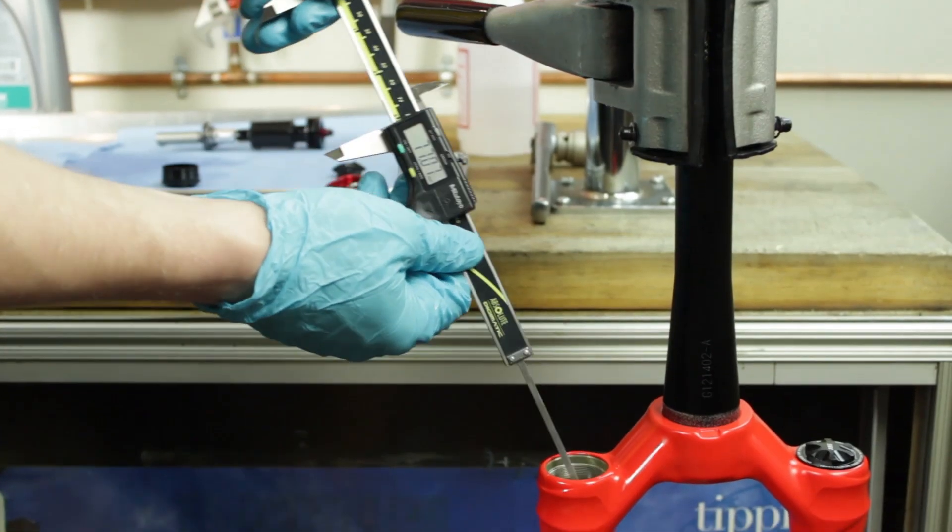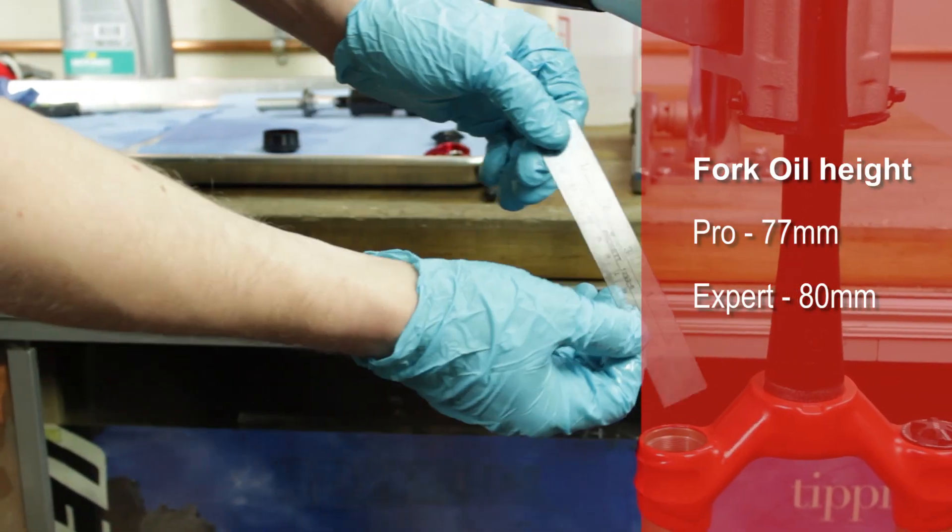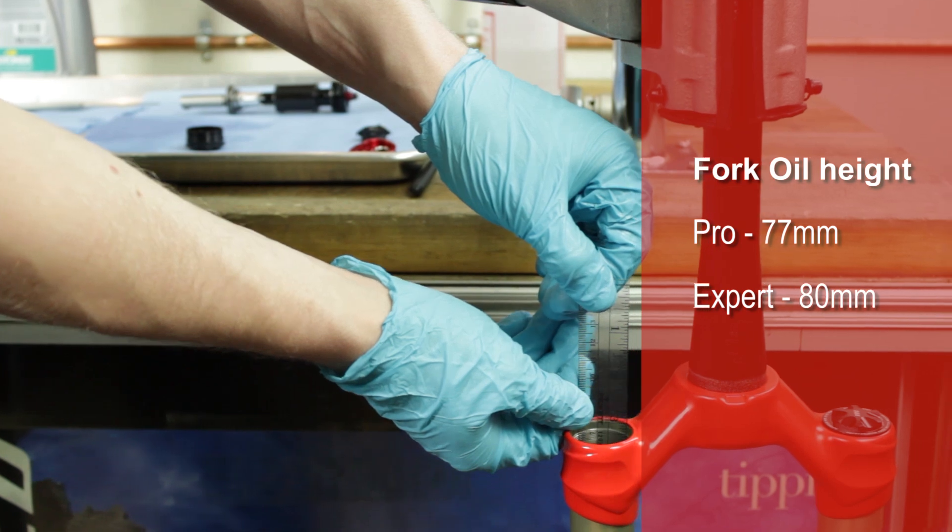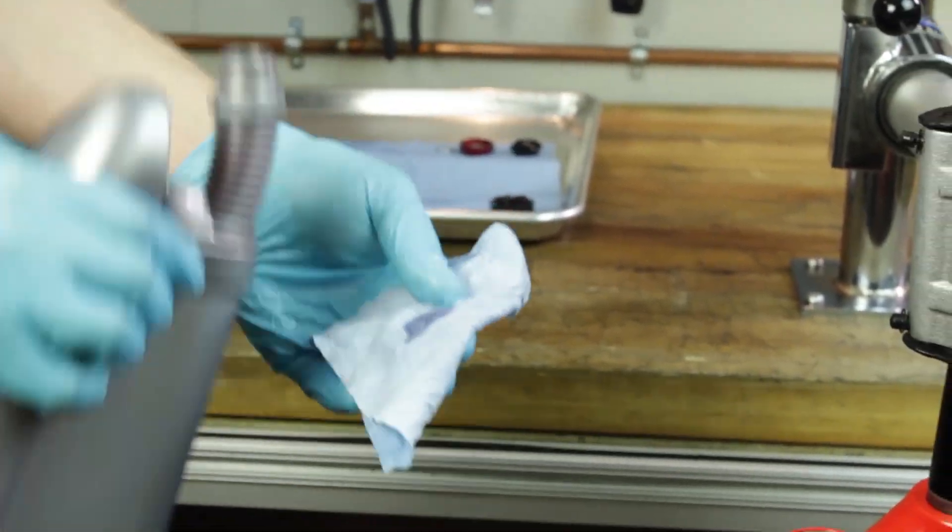This method is the caliper depth gauge. Here's a demonstration of how to use the ruler to measure the oil height. The Matic Pro will have an oil height of 77 millimeters while the Expert will have a height of 80 millimeters.